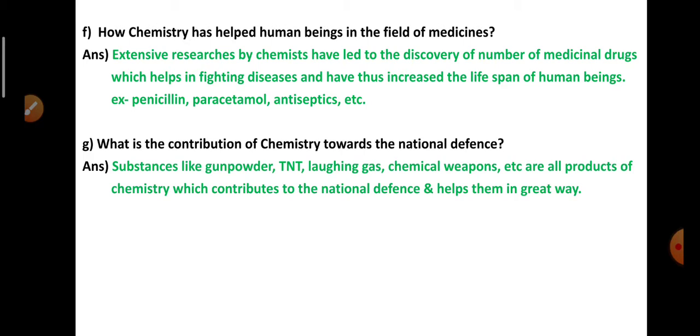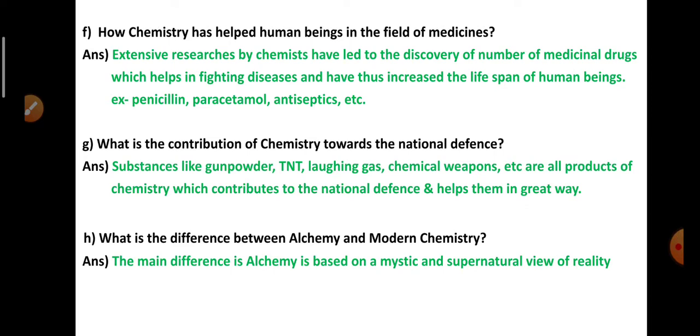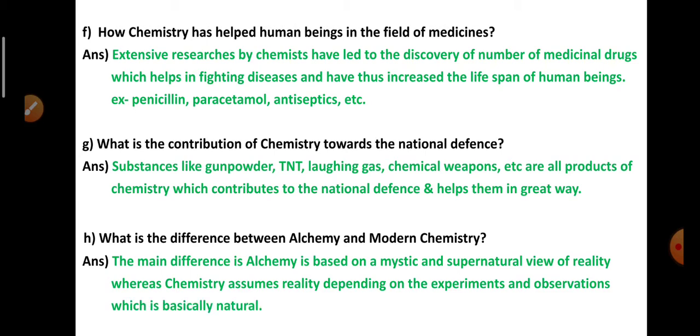What is the difference between alchemy and modern chemistry? The main difference is alchemy is based on a mystic and supernatural view of reality, whereas chemistry assumes reality depending on the experiments and observations, which is basically natural.